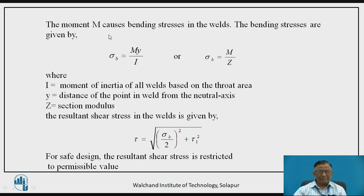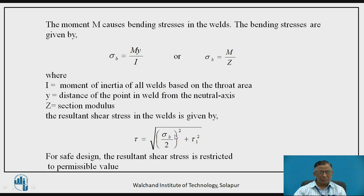The moment M causes bending stress in the welds, and we know that bending stress is equal to M·Y / I, where M is the moment, Y is the distance from the neutral axis, and I is the moment of inertia of all the welds. Also, I / Y can be substituted as section modulus Z, so bending stress sigma_B can also be calculated as M / Z. The resultant shear stress is obtained by the principal shear stress theory: tau = sqrt((sigma_B / 2)² + tau_1²). This resultant tau is equated to the permissible value to find the weld size.